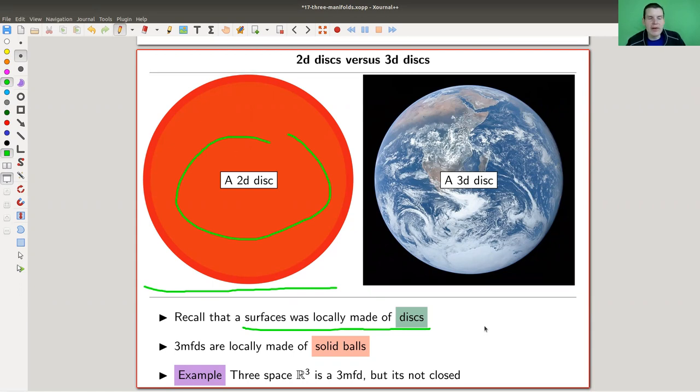We can just generalize that. Surfaces were locally made out of disks, so for three manifolds the next step we want them to be locally made out of 3D disks. Here's an example of a 3D disk—it's a solid ball. This one is a big solid ball, but anyway, it's quite different. So one dimension higher, three manifolds should be locally made out of solid balls.